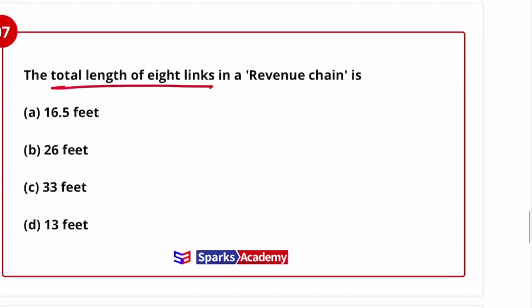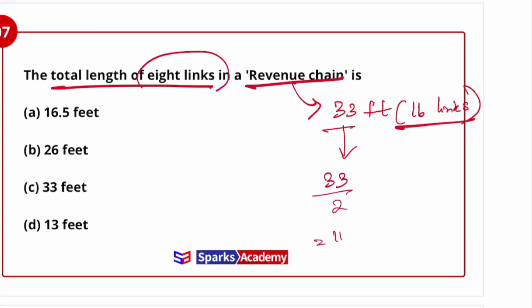The total length of 8 links in the revenue chain: Revenue chain overall length is 33 feet, made up of 16 links. So if 33 feet has 16 links, 8 links would be half of 33. Therefore 33 divided by 2 equals 16.5 feet.